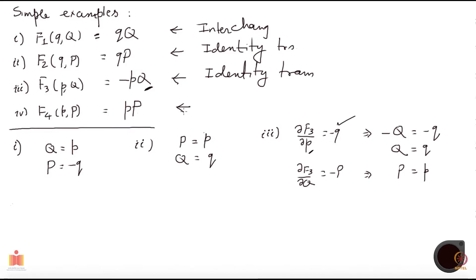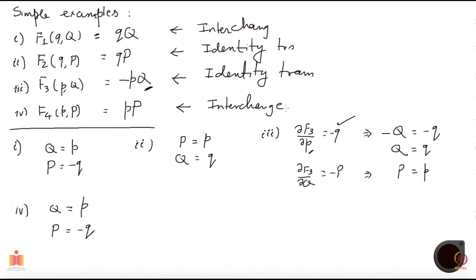And if you look at F4, you will find that the new coordinate is p — the old momentum — and the new momentum is minus the old coordinate, which means this is again an interchange. So these four generating functions F1, F2, F3, and F4 are called generating functions of the pure kind.